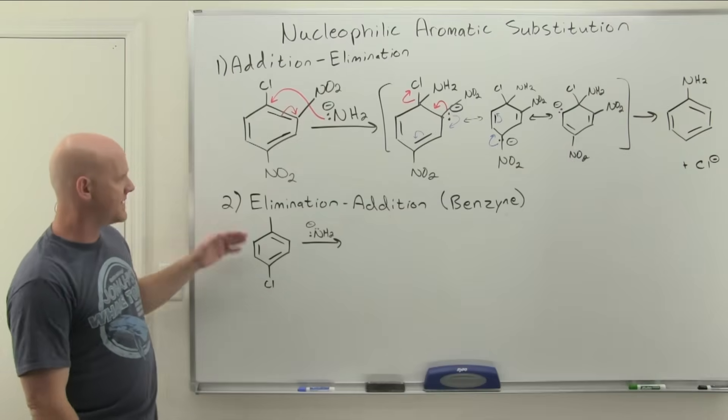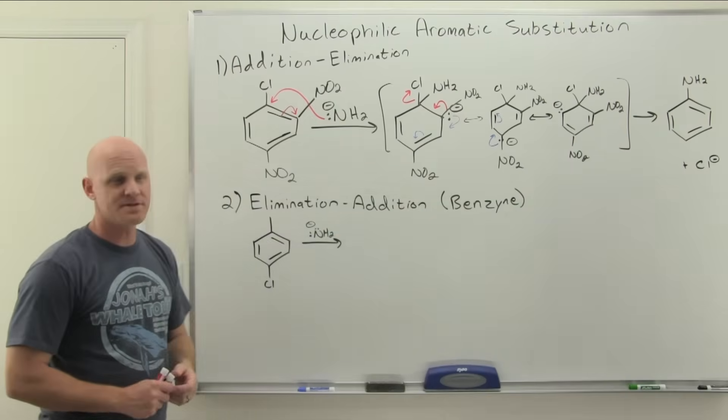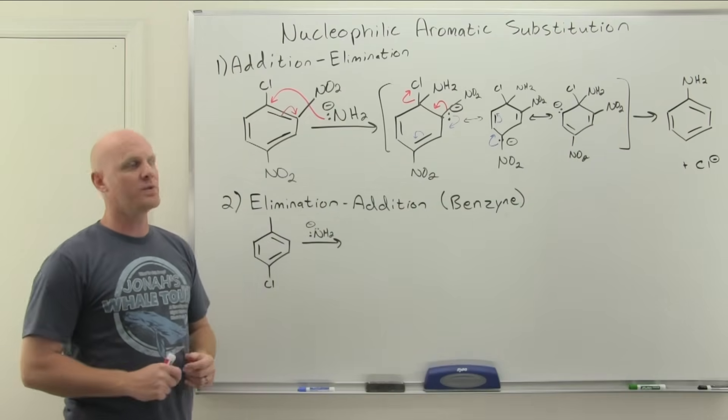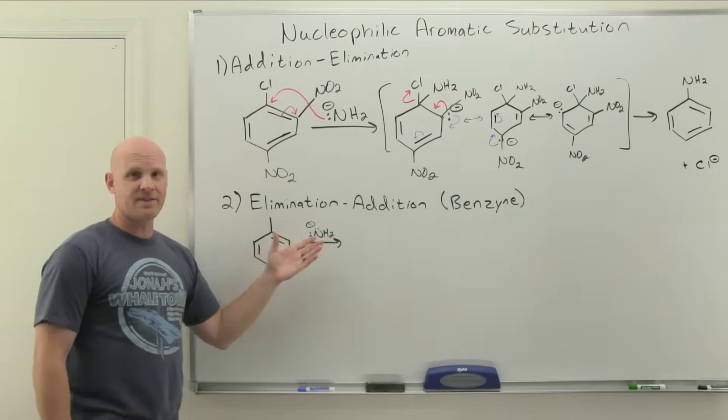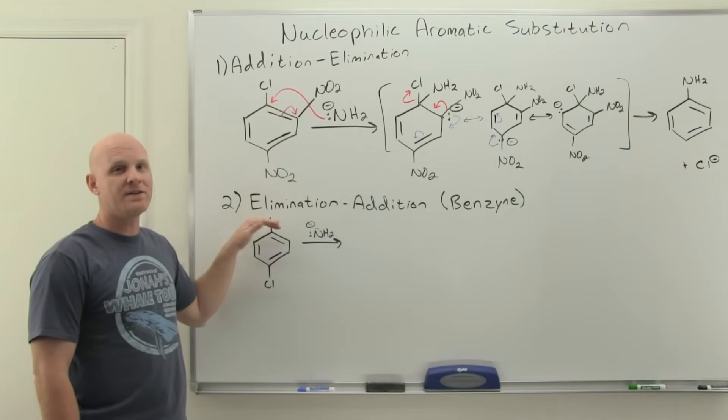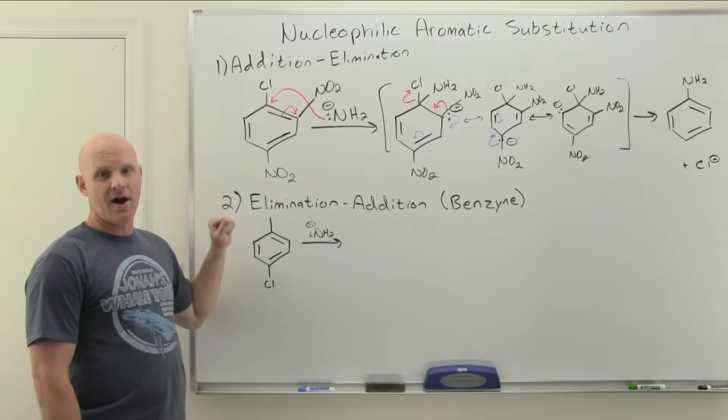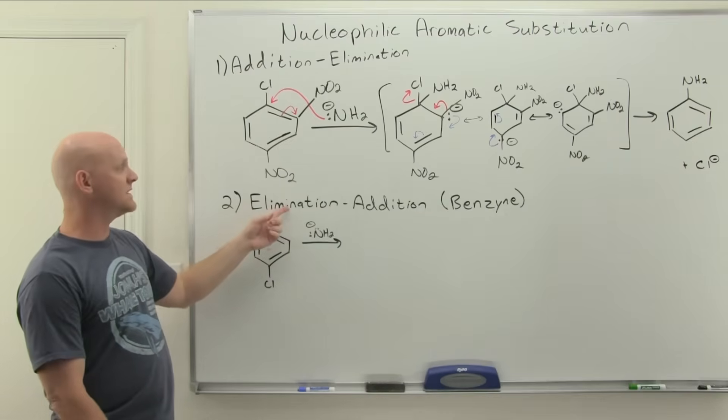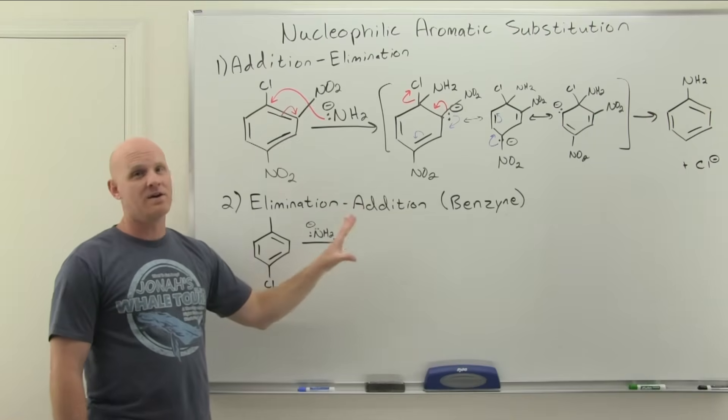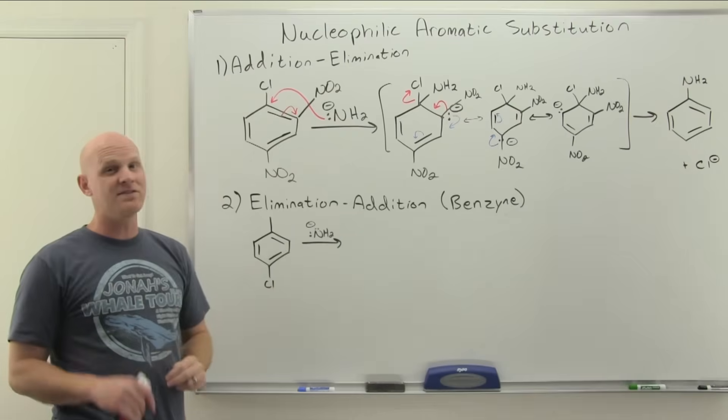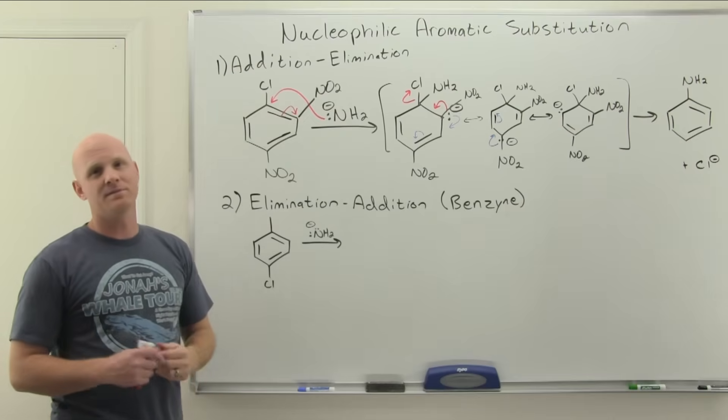Now we'll take a look at the second mechanism, which reverses the order of steps here. It's elimination addition. It's also called the benzyne mechanism sometimes based on this benzyne, which is going to be a really weird intermediate structure along the way. Same reagent, so like NaNH2 and stuff like that. The big thing here is this mechanism becomes the more likely mechanism when you don't have electron withdrawing groups to stabilize a carbanion intermediate. This one's not going to proceed through a carbanion intermediate in the first step when we do elimination like we did when we did addition. For the rate determining step here, this won't involve a carbanion. It's going to involve this funky benzyne intermediate. When you don't have electron withdrawing groups on your ring besides your leaving group, that becomes the more likely mechanism.